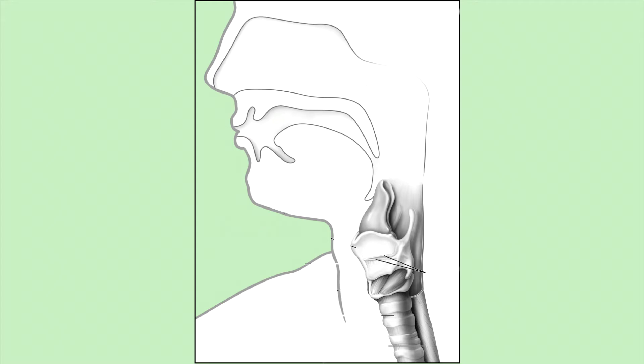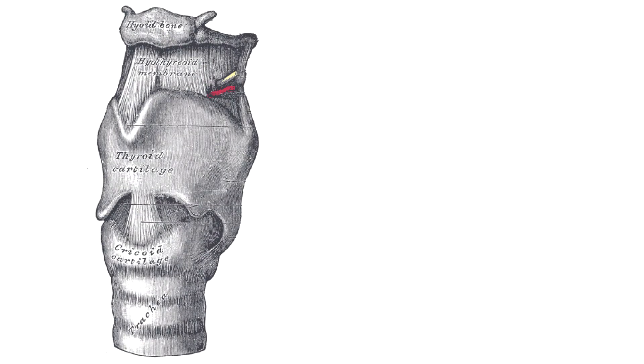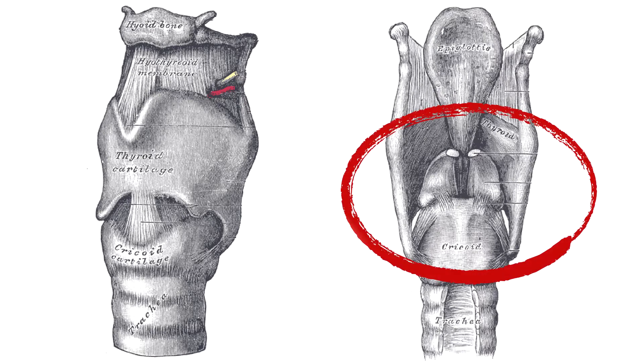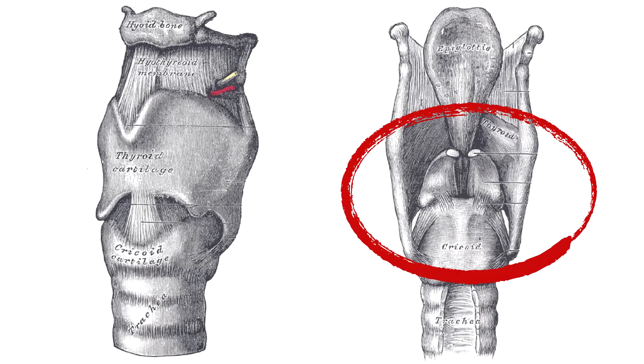Let's start by seeing how we make sounds. At the top of our trachea is the larynx, and inside are two folds of tissue. These are the vocal cords.